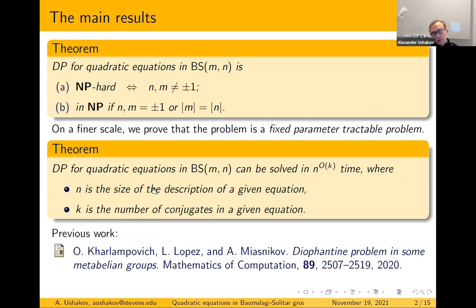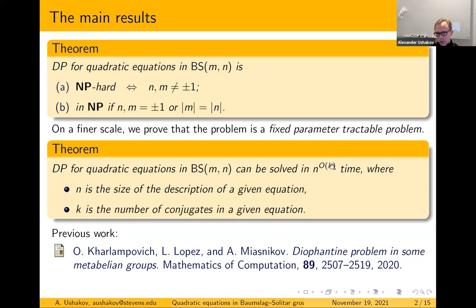The Diophantine problem for quadratic equations in BS(m,n) can be solved in a certain time. Here n is the size of the description of a given equation. The number k — which is m on the next slide — is the number of conjugates in a given equation. So the complexity, the upper bound, is n to the power big-O of k, so it's a polynomial.